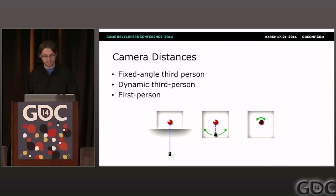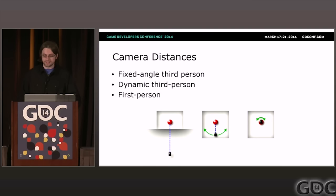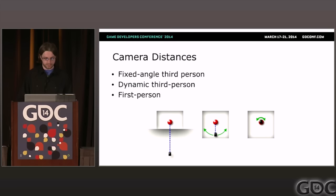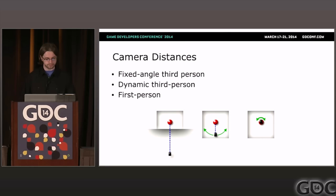Dynamic angle third-person games are on a weird sliding scale between close and far camera distances, with kind of all the downsides of both. For Journey, we wanted players to look in any direction, so we couldn't use fixed angle. But we also wanted a clear view of the avatar's body, so we couldn't use first-person. That means we need a camera that physically fits inside the world alongside the avatar, and we have to worry about collision detection and keeping the space between the camera and the avatar clear.